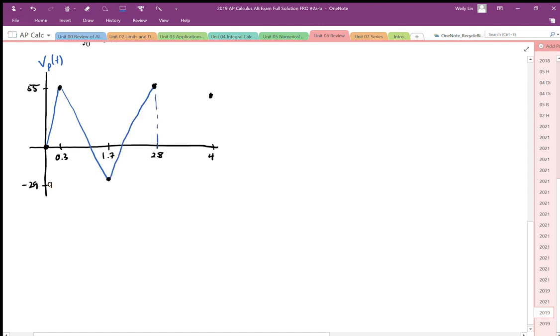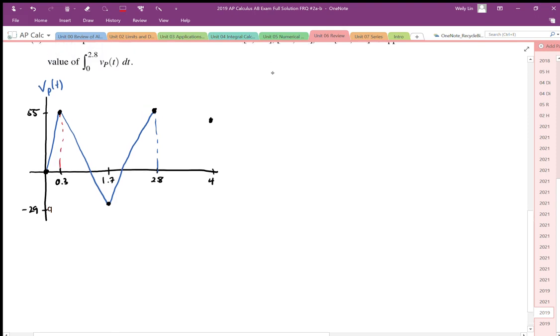So to calculate the first interval, we're just going to take the area of that triangle. So that's the total area. So we'll write this out as the value of the integral from 0 to 2.8 of v of t dt. That's going to be equal to the area here, which is 55 times the interval width, the 0.3, divided by 2.